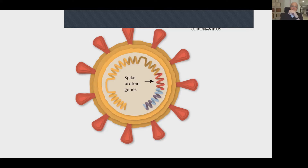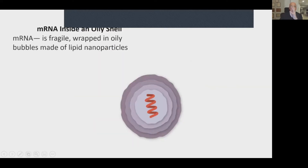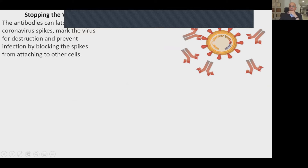The messenger RNA is the instrument for telling the cell to make spike proteins. The messenger RNA in both Moderna and Pfizer is situated in an oily shell, which is then injected into you. It's fairly fragile, which is why Pfizer requires an extremely low temperature to maintain the stability of this structure. When the cells produce these spike proteins, antibodies are produced and then destroy the virus.